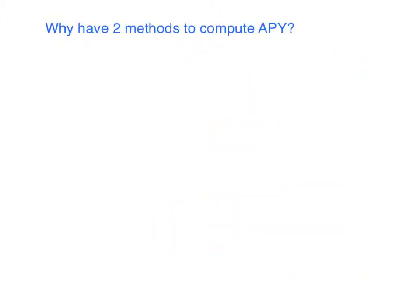So right about now you're probably wondering, why do we need two different methods for computing the APY? Well, it all has to do with what information you're given.